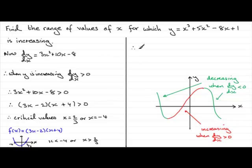But in answer to the question, we can say that therefore y is increasing for x less than minus 4 or x is greater than two thirds. Now, what does this graph look like?